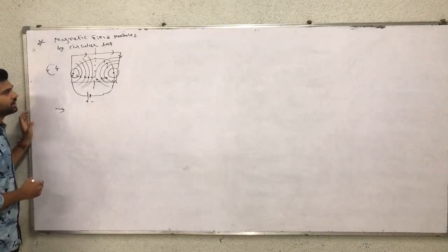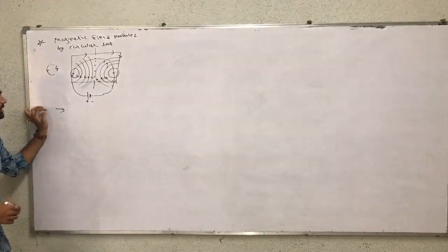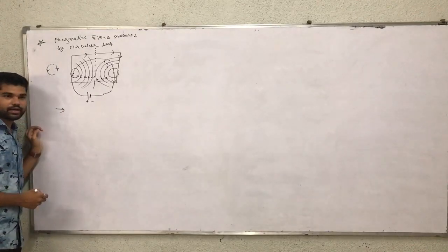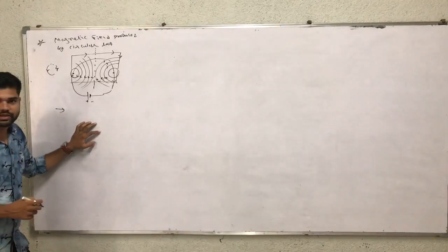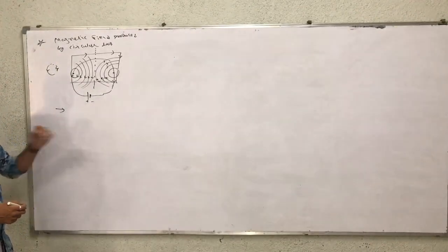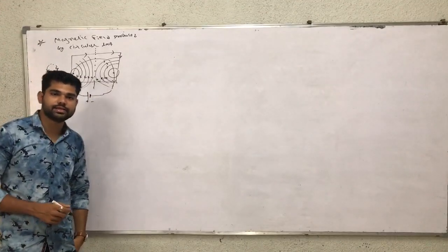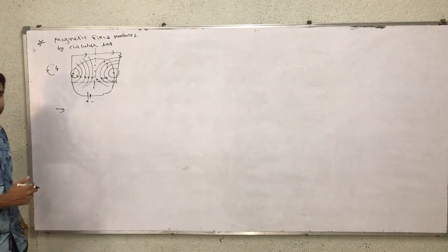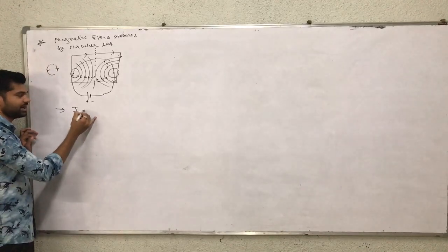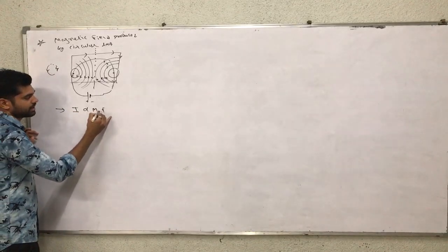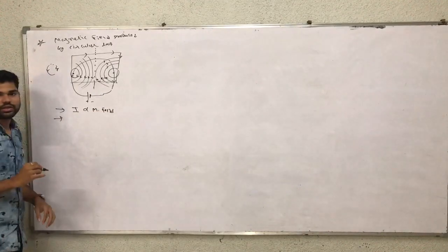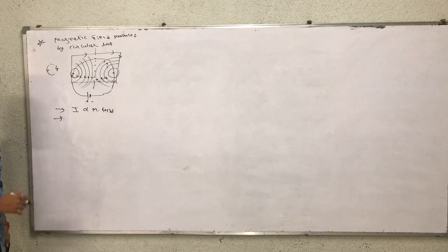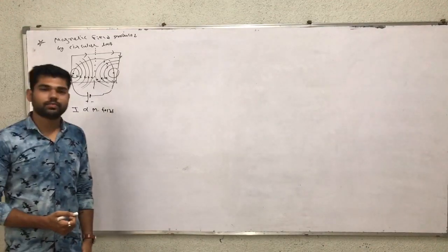We also observe that when the number of loops is increased, the magnetic field will also increase. The relation between magnetic field and electric current is directly proportional to each other. When the applied electric current is high and continuously increases, the magnetic field also continuously increases — electric current is directly proportional to magnetic field. Another relation: when the distance is increased, the magnetic field is decreased — magnetic field is inversely proportional to distance.